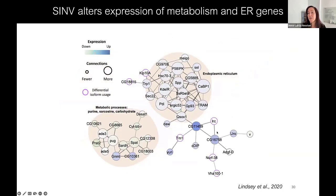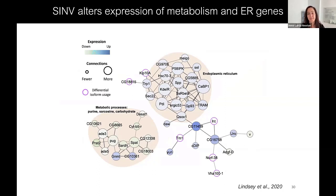What we really wanted to understand was how these two intracellular entities interact with each other — the interface between Wolbachia and virus. What are the genes that these two different intracellular organisms are fighting over? We combined the networks together: purple for the Wolbachia-responsive network, gray for the Sinbus-responsive network, teal for interactive effects such as isoform usage, and yellow for genes affected by both.